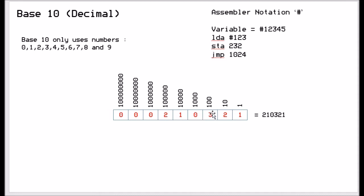So if you have a number that says 2, 1, 0, 3, 2, 1, that is 2 times 100,000 plus 1 times 10,000 plus nothing at 1,000 plus 3 times 100 plus 2 times 10 plus 1, which equals 210,321. And the only numbers that you can use are between 0 and 9.